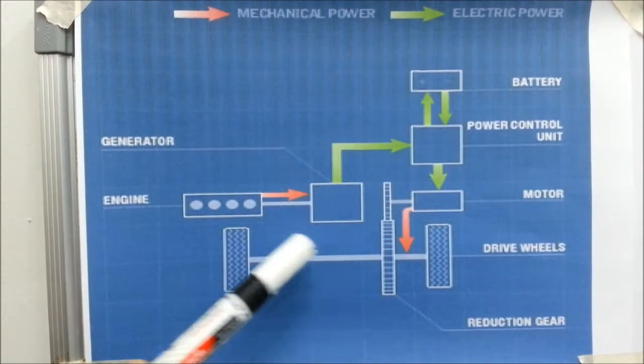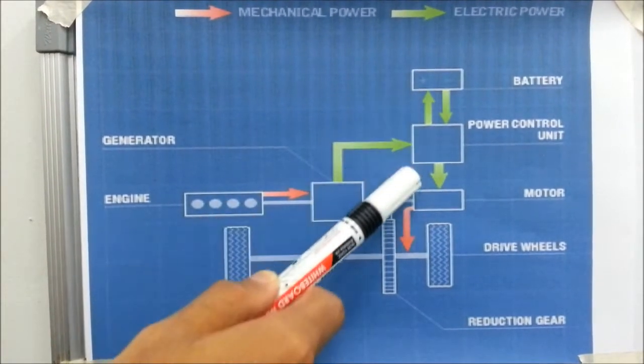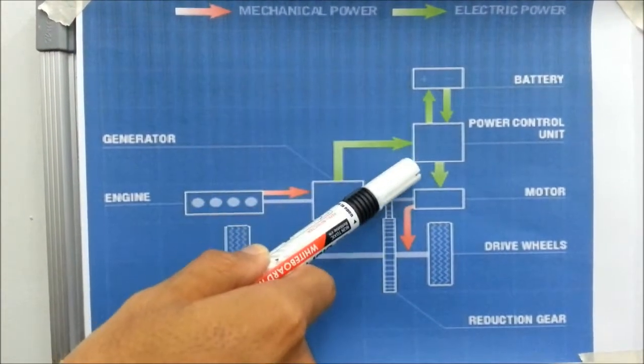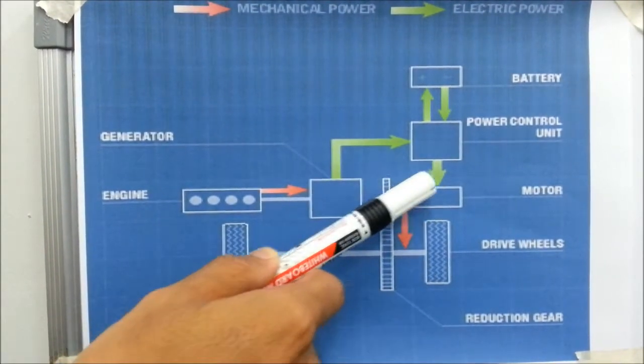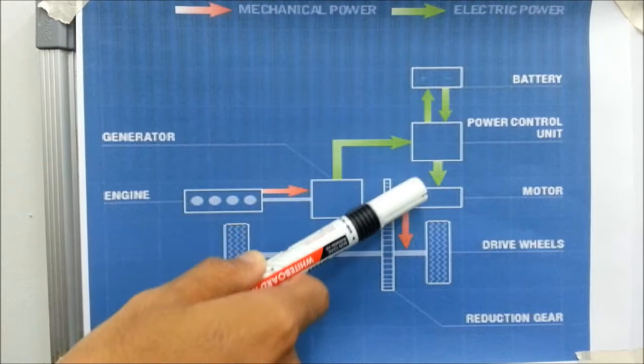During regeneration, the power can also flow in the opposite direction, from the wheel converted to electricity at the motor to the battery to be stored.